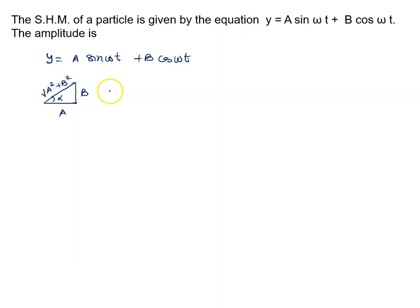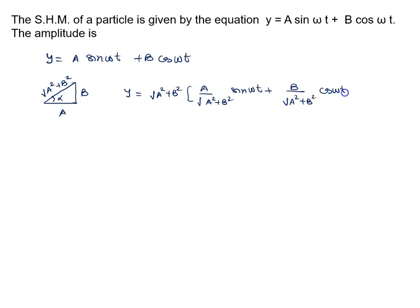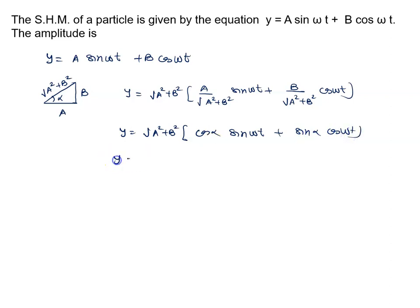Multiplying and dividing by the hypotenuse: y = √(a² + b²) · [a/√(a² + b²) · sin(ωt) + b/√(a² + b²) · cos(ωt)]. From the right-angle triangle diagram, we can say this equals cos(α)·sin(ωt) + sin(α)·cos(ωt), so y = √(a² + b²) · sin(ωt + α).